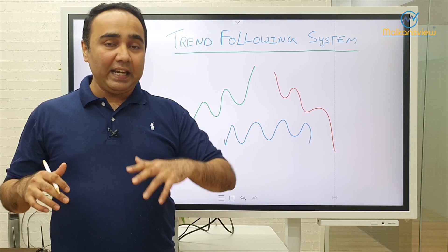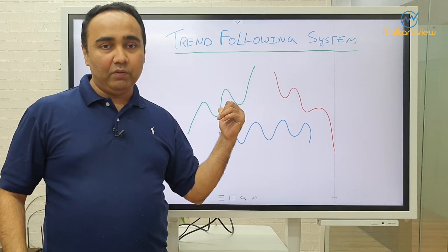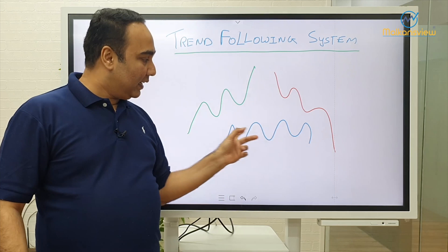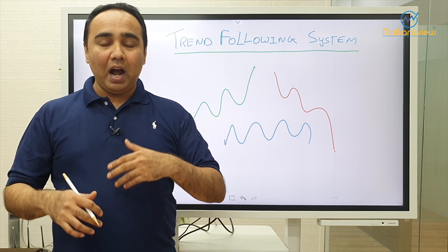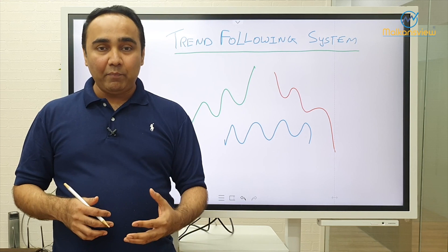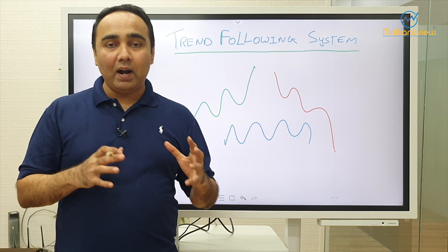In the uptrend, we will make money on the long. In the downtrend, we will make money on the short. And in the sideways, we will lose money — provided we follow the whole system for the whole year. There is something called positive expectancy of the system, which I am going to demonstrate in a very interesting way: how trend following can work, what are the advantages of trend following, and why you should be doing it in your trading.